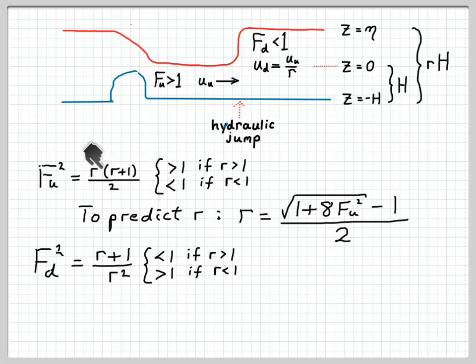We can turn this relationship around and use it to predict r if we know the upstream Froude number. That's just a solution of a quadratic equation, and that's the expression you get right there.